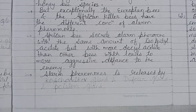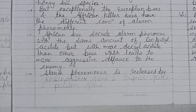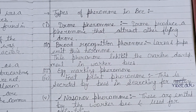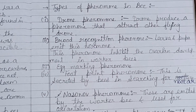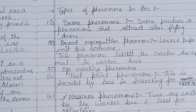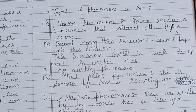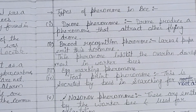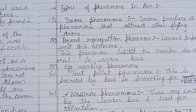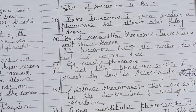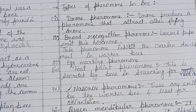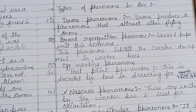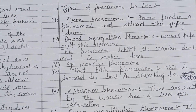There are various types of pheromones present in bees. The first is the drone pheromone. The drone — the male counterpart to the queen honeybee — produces a pheromone that attracts other flying drones. This pheromone is secreted to promote drone aggregation at a particular site.